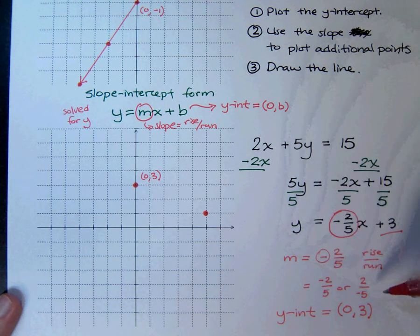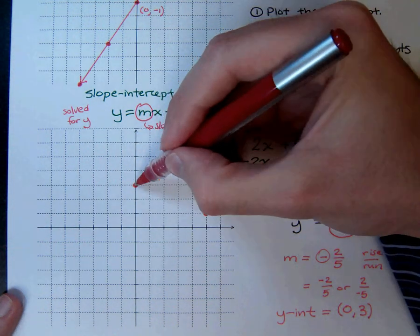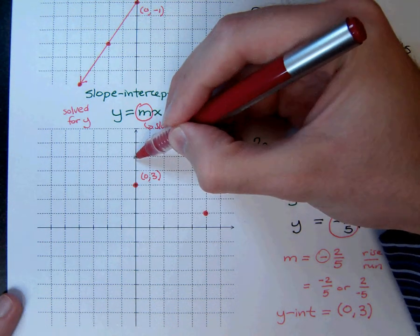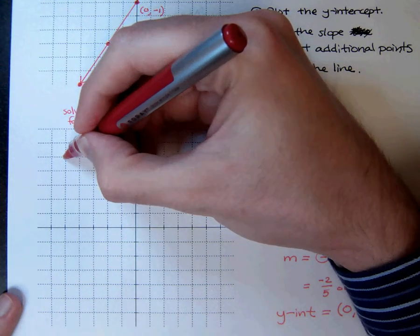Let's look at it this way. A rise of 2 and a run of negative 5. So if I go up 2 and run negative 5, that means going to the left in the x direction. And then we have that point.